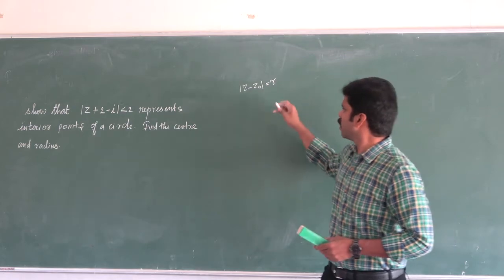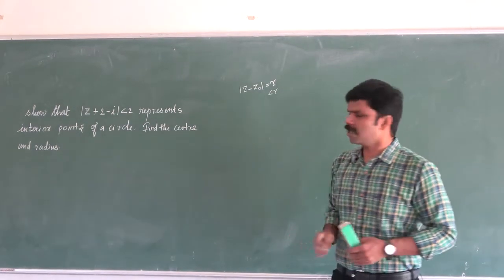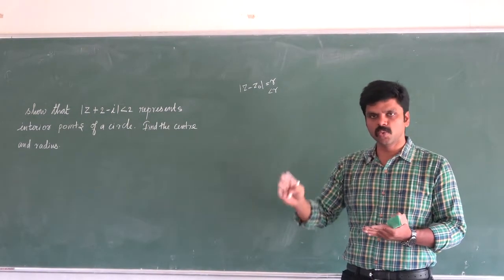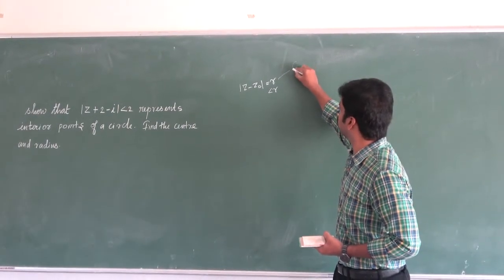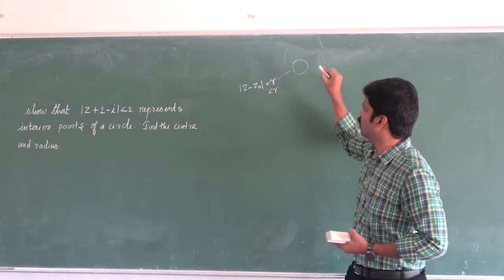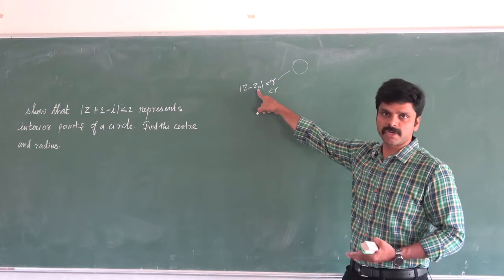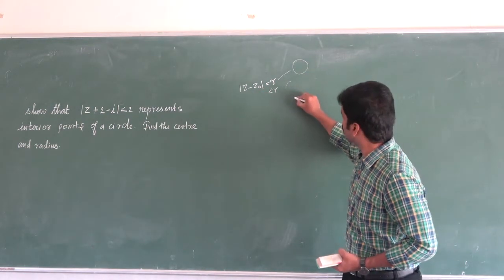If we have less than R, it represents a point inside the circle. So, this diagram represents the line out of the line.